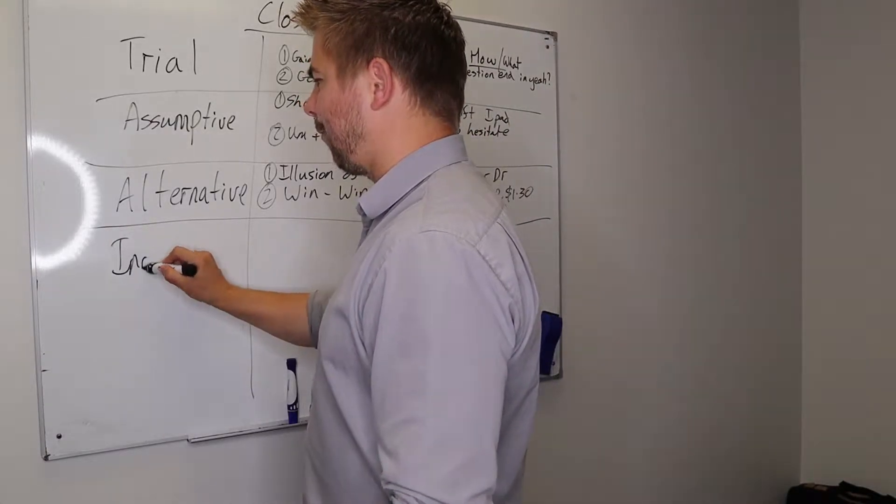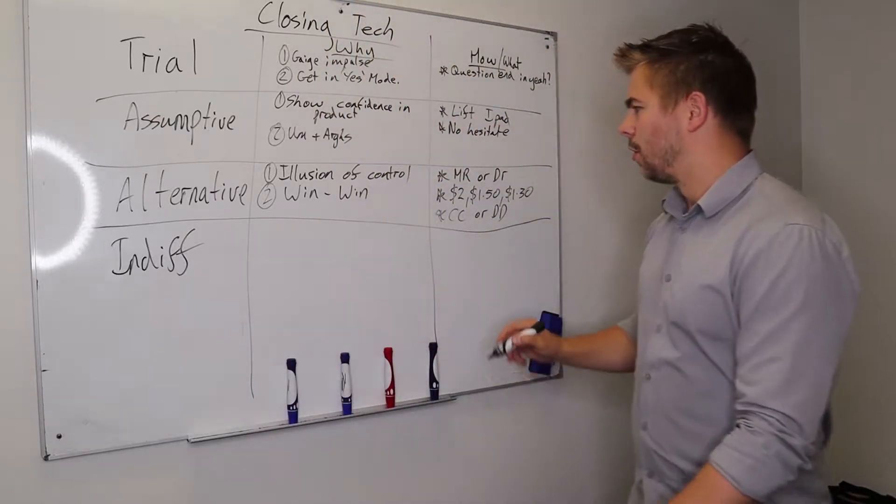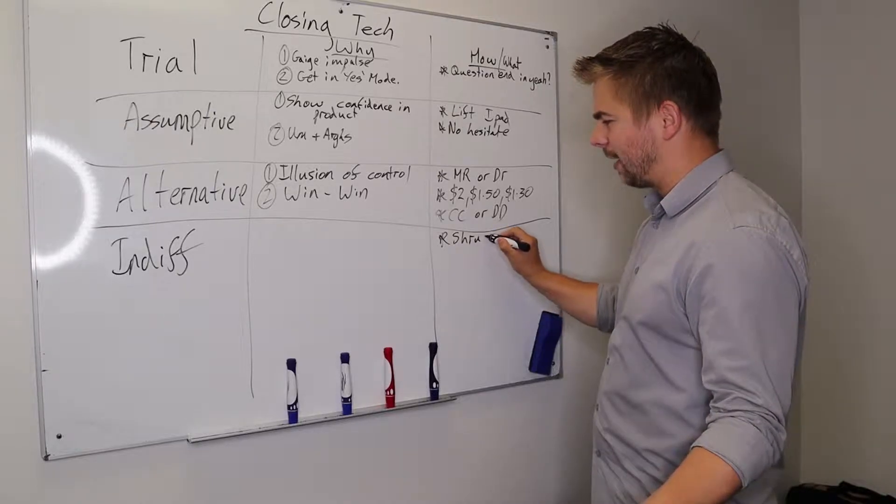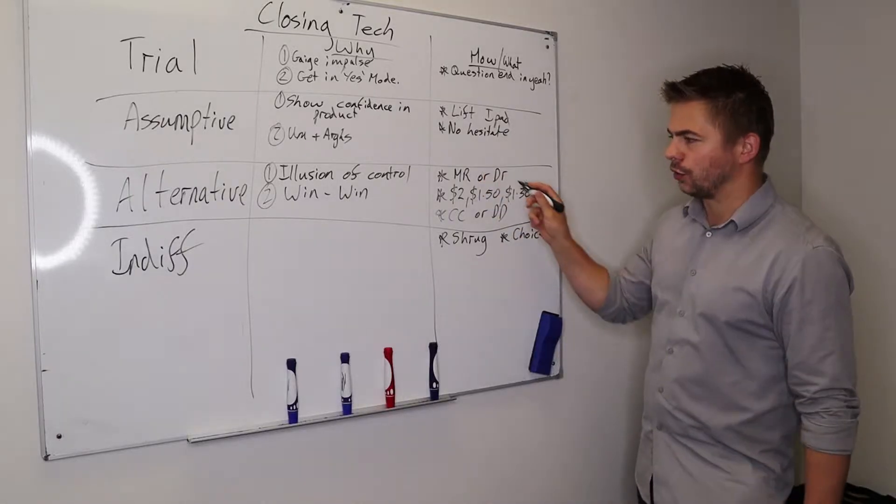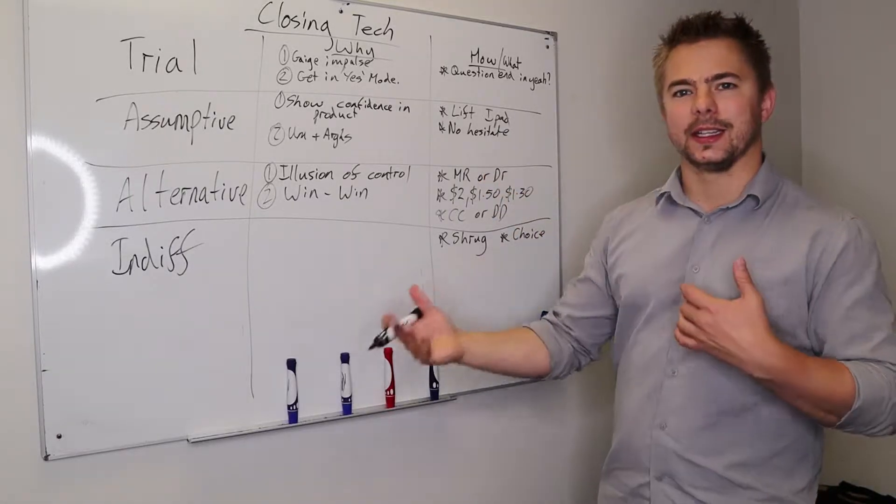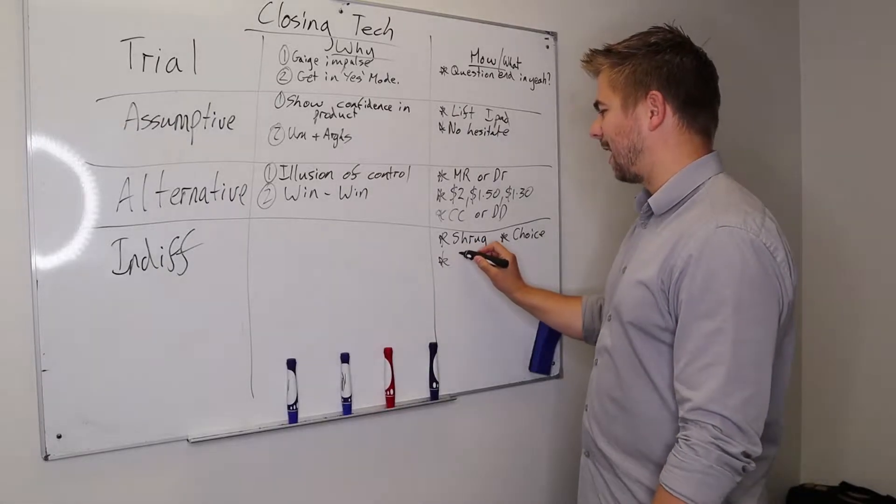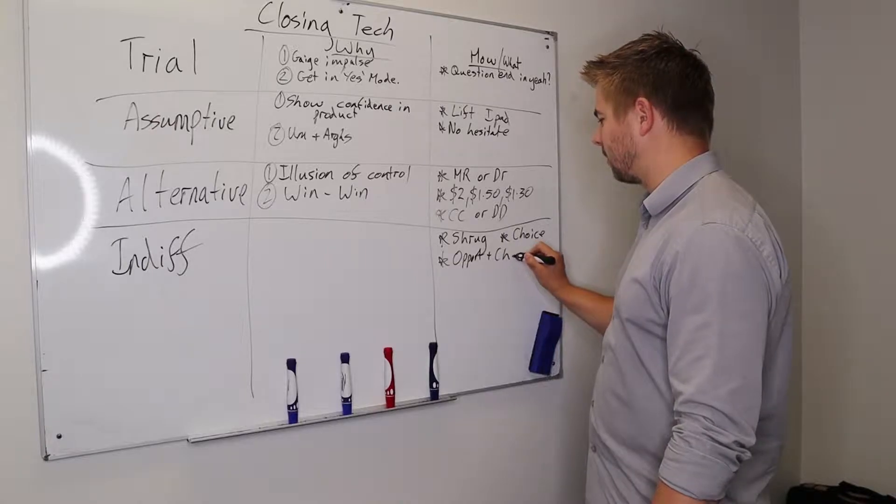Then we've got an indifferent close. So with an indifferent close, what you do is anything where you might say involving shrugging. You might give them a choice. So for example, you might give them a choice between these amounts that you can choose. So it's indifferent. You're not assuming I'm onto it. You might even say words like opportunity and chance as well.